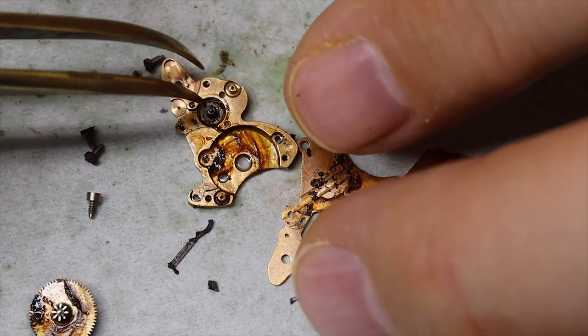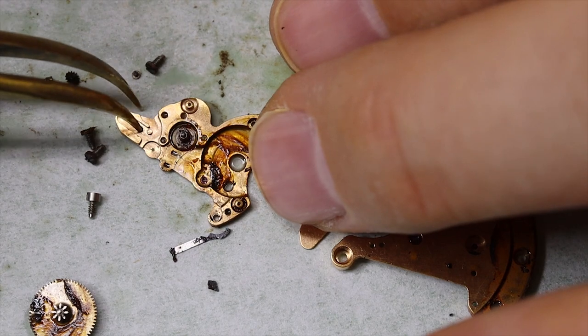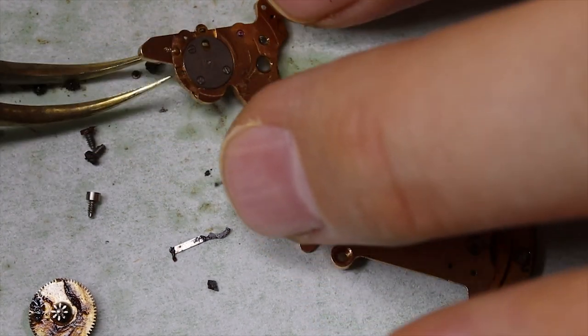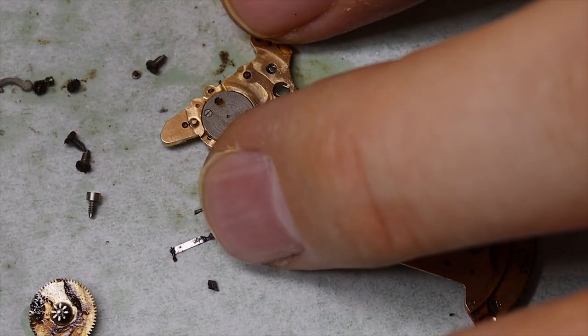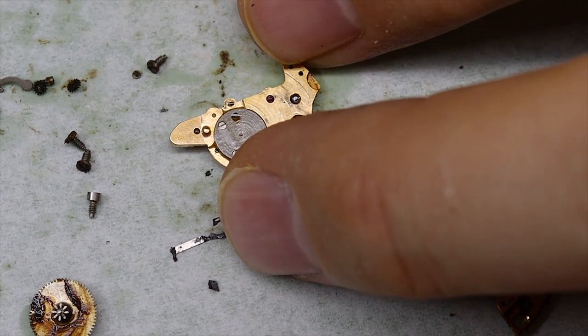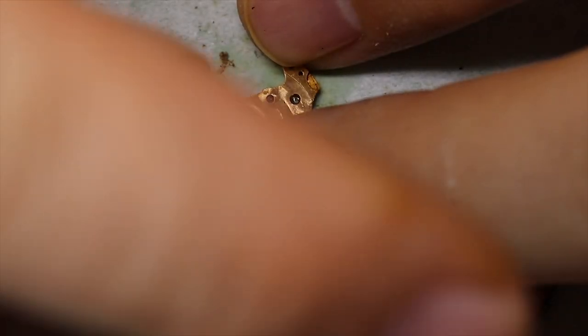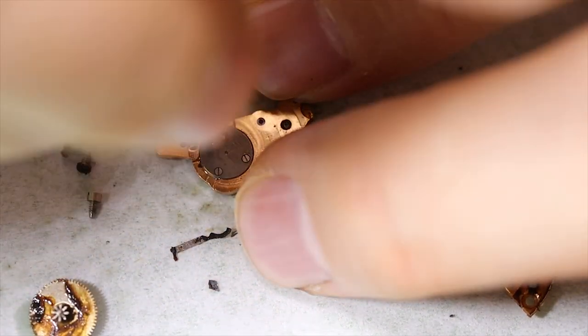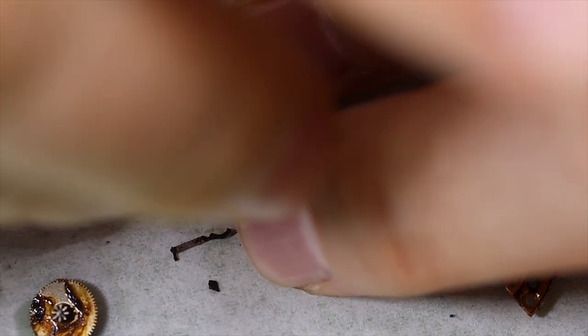And here we have the intermediate wheel and the winding wheel. And we see there's a lot of rust here. Let's just take off the post for the rotor as well. Also something that's typically not that all necessary, but there could be some rust where it meets the brass, so let's take it off and clean it.